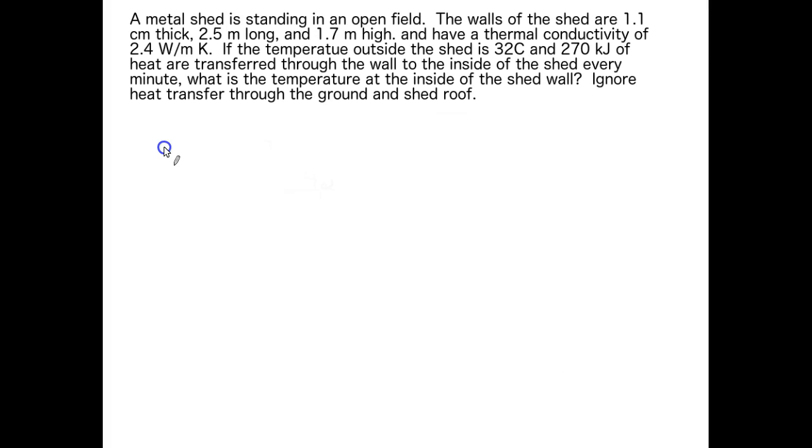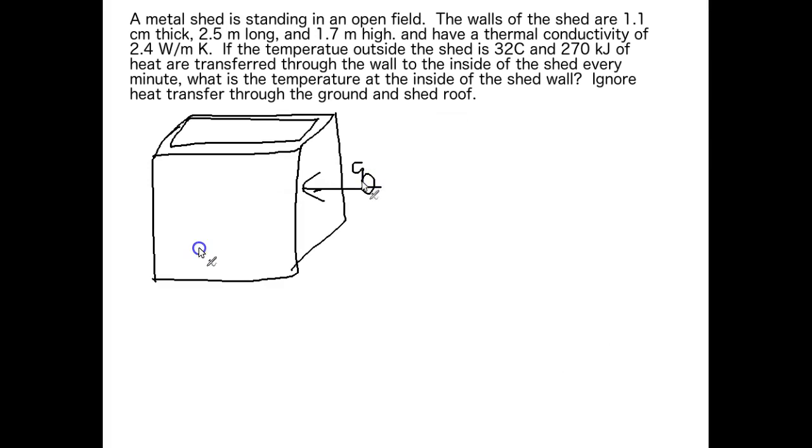We'll start this problem by drawing our diagram. Diagrams are important for sorting out all the information you're given and figuring out which way the heat is supposed to be going. Alright, there's our shed. We know the outside temperature is 32C, but we don't know which way the heat's going. We don't know if the inside of the shed is warm or cold until we look and see that 270 kilojoules of heat are transferred through the wall to the inside. So the heat transfer is going this way. That means since we set our heat transfer equation from the perspective of the inside of the object we're looking at, we have a positive Q because heat is going into that shed.